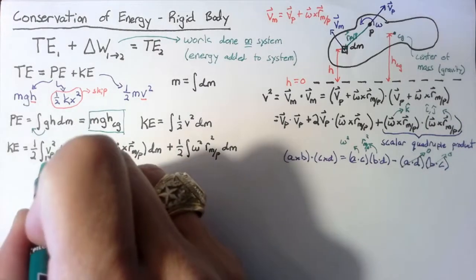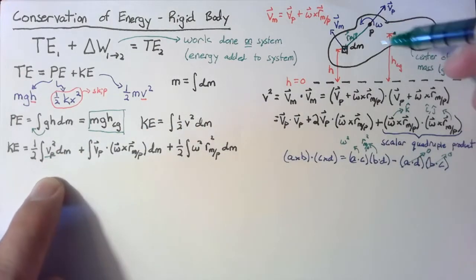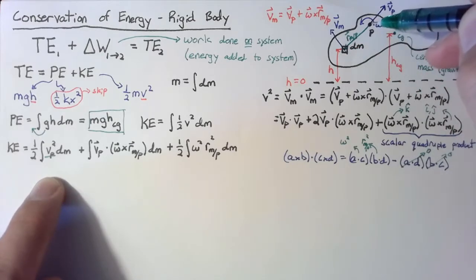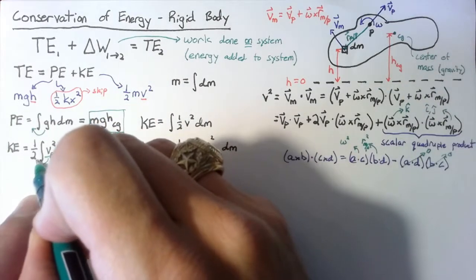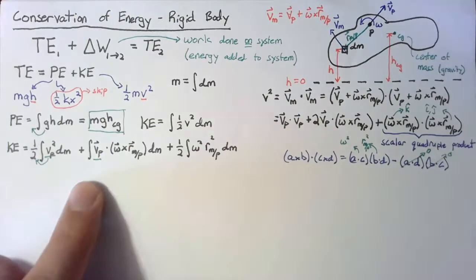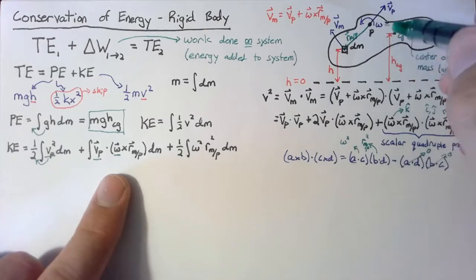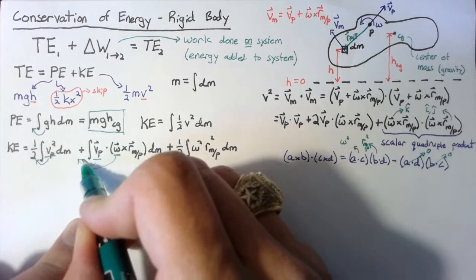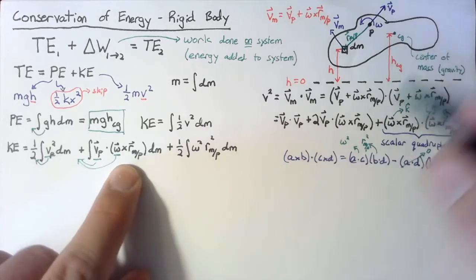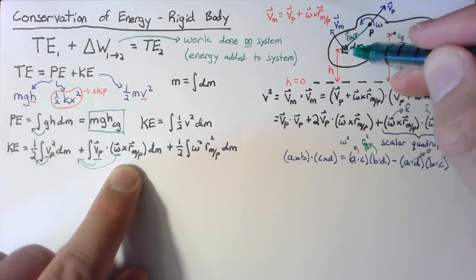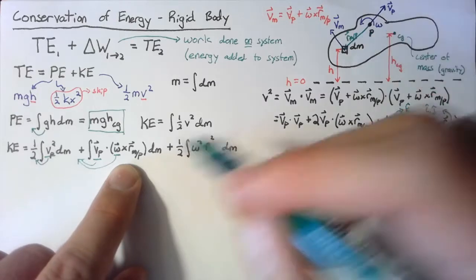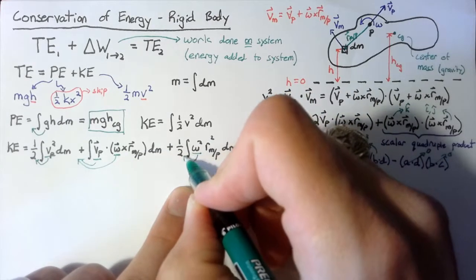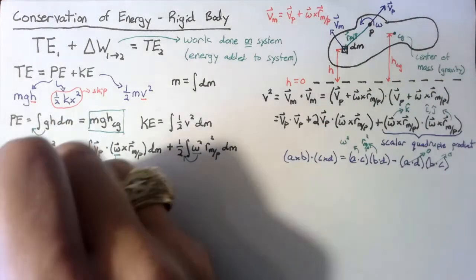Now we identify constants within these terms. The velocity vp is the velocity of a single point — as we move around the body changing the dm position, vp doesn't change, so it moves outside the integral. Similarly, omega is the same for the entire rigid body, so it also moves outside. The position vector r changes as dm moves around, so it must stay inside the integral. Omega squared also moves outside, leaving r inside.